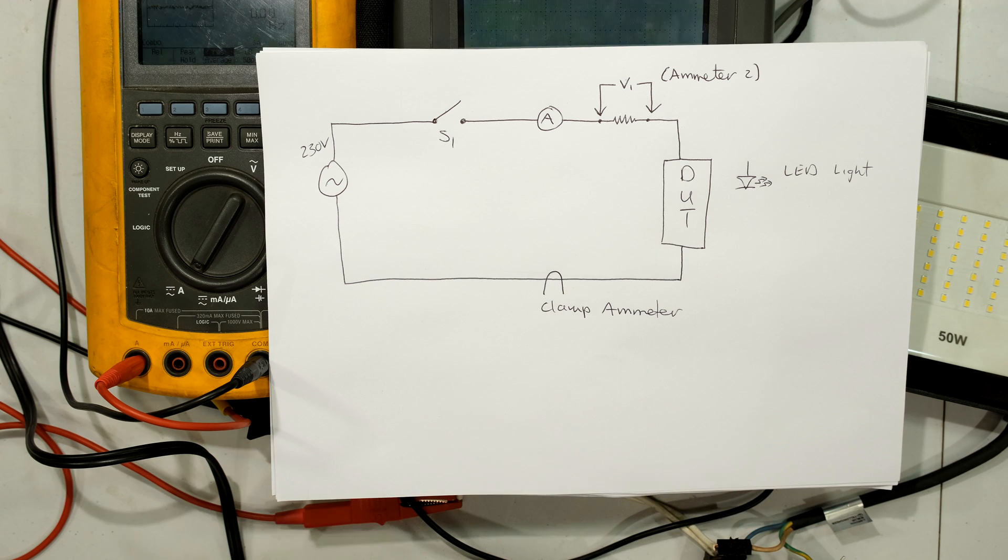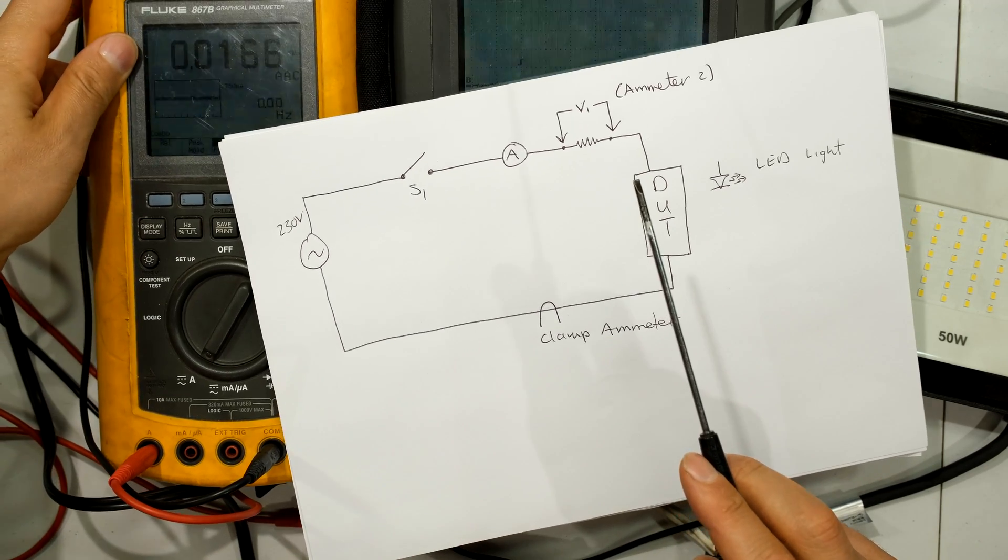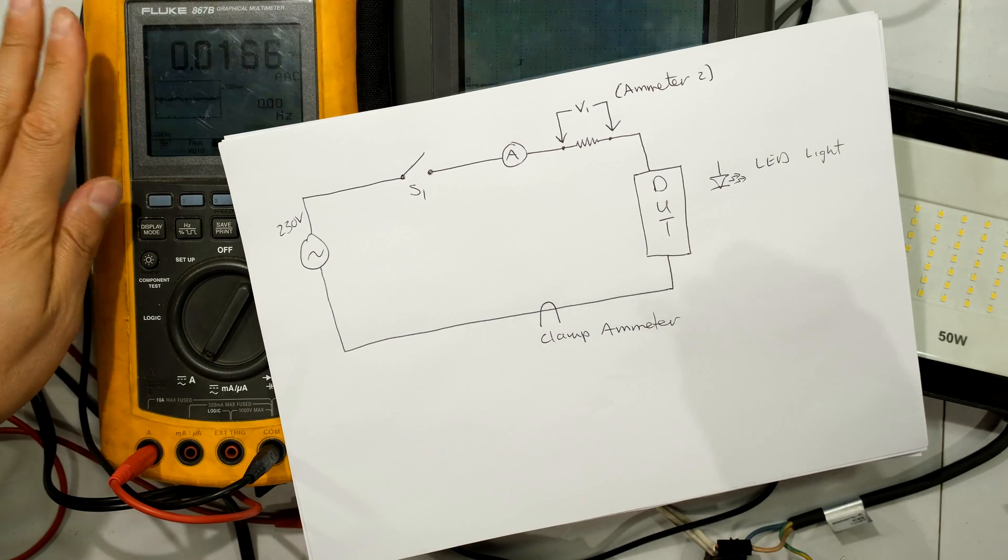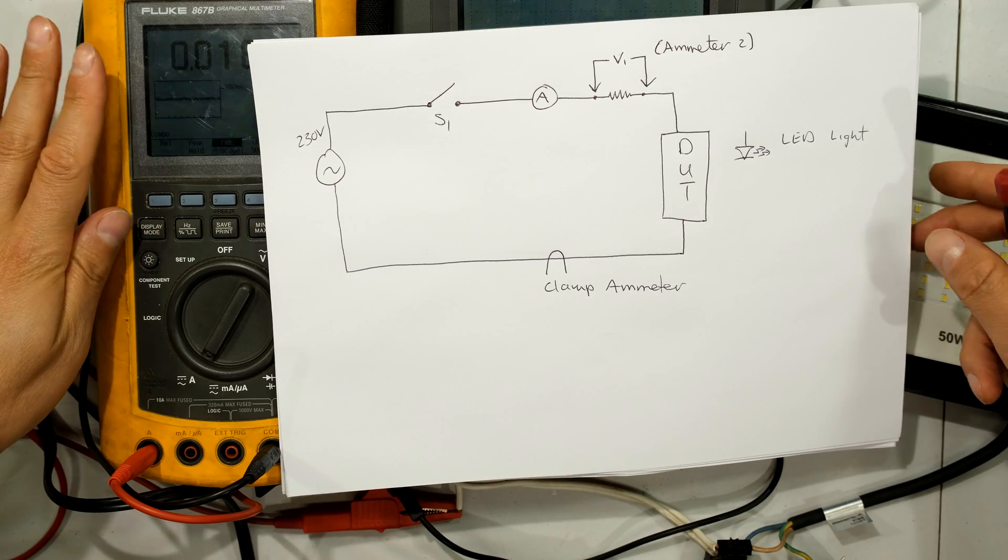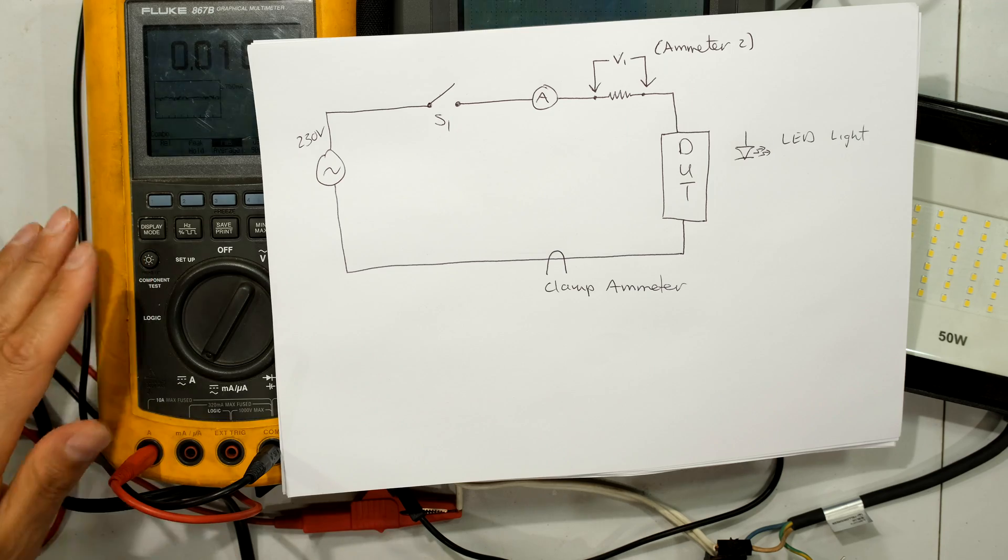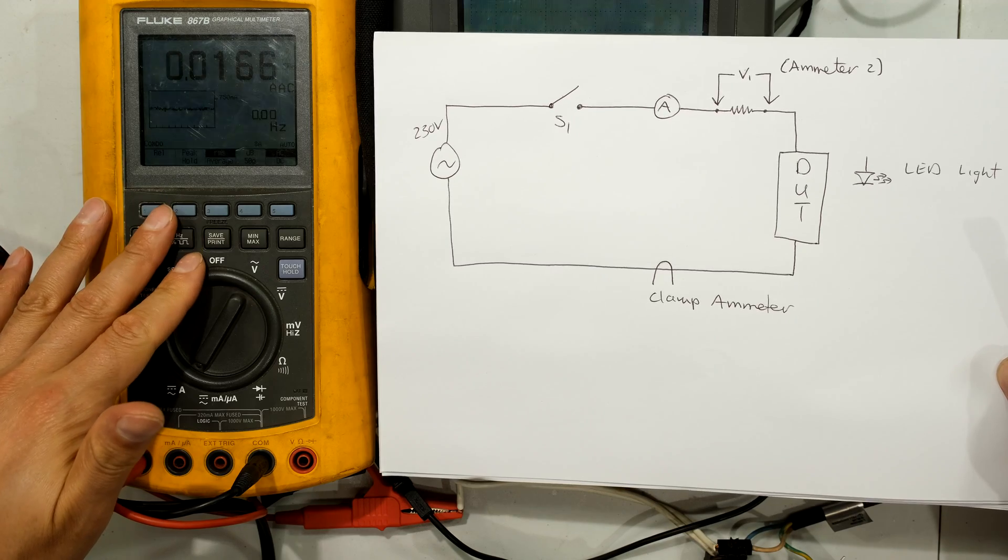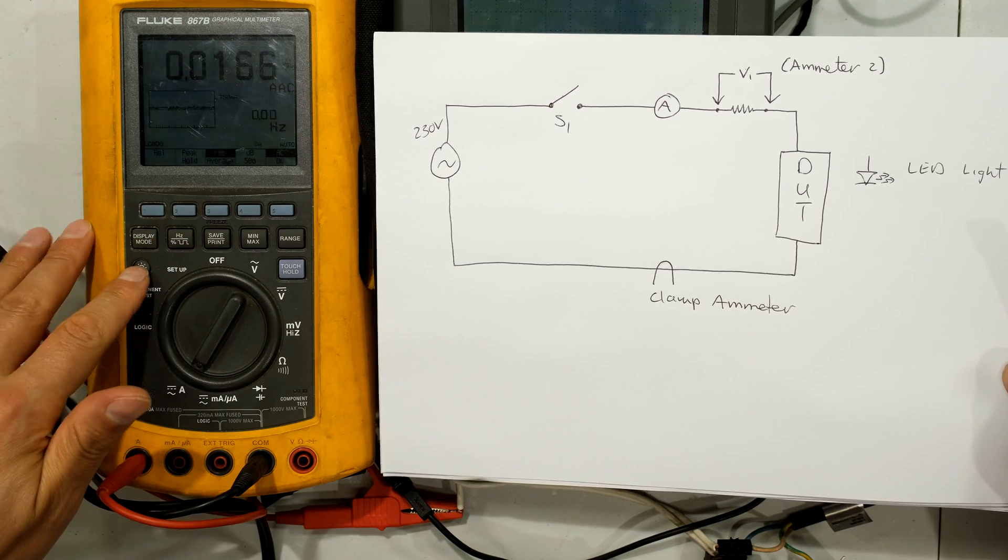In this circuit I actually have three current measurements. This ammeter here, the Fluke 867b meter, is extremely accurate but its response time is probably a bit too slow, so it's not picking up that minimum and maximum inrush current but it is extremely useful for the nominal current.